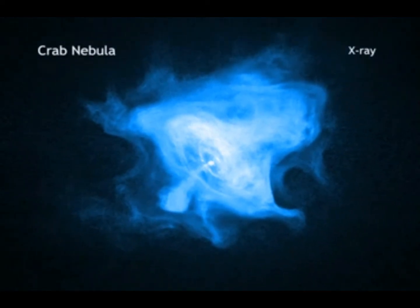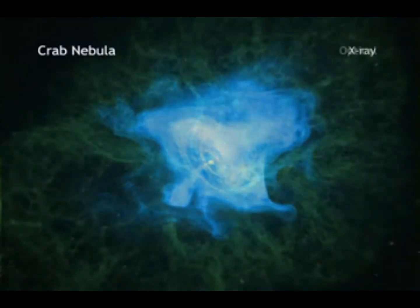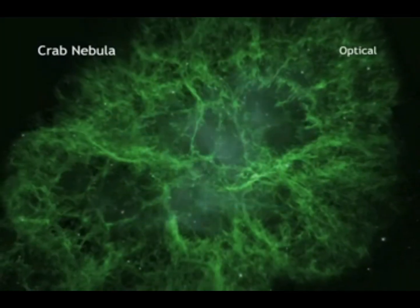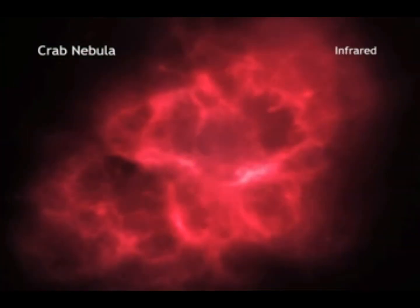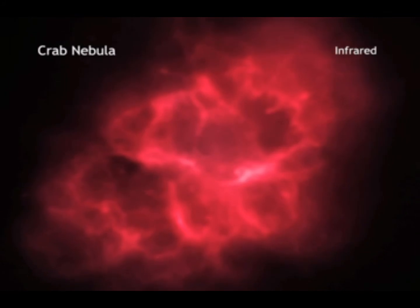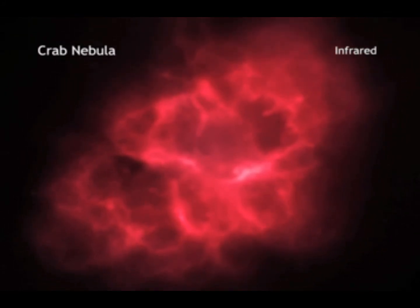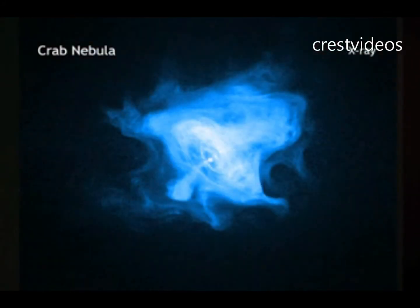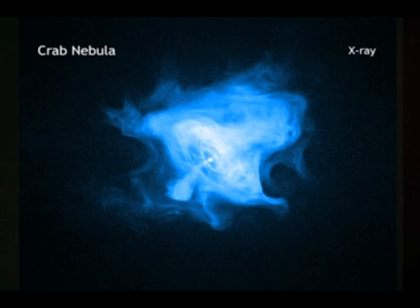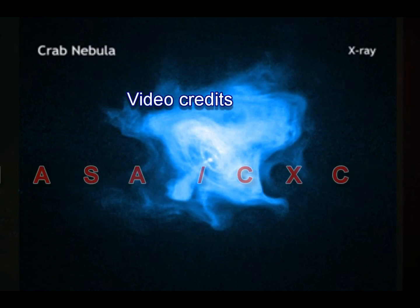Looking at the Crab in other wavelengths, such as optical light from Hubble, seen here in green, and Spitzer's infrared view in red, we see a much different picture. The size of the X-ray image is smaller than the others, because X-ray emitting electrons radiate away their energy faster than the lower energy electrons that emit optical and infrared light.